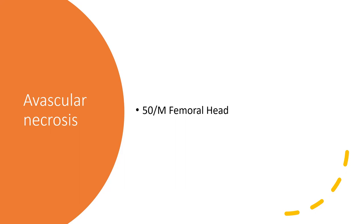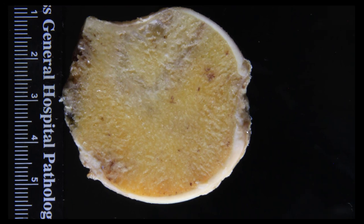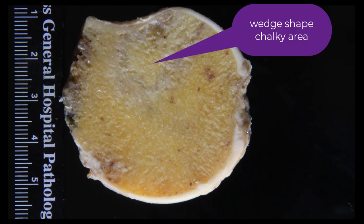In this talk, I'm going to show you two cases of avascular necrosis of the femoral head. The first is this one, which is a 50-year-old male. Fair warning, the gross does not match the microscopic image, but I did want to give you a sense of what avascular necrosis looks like.